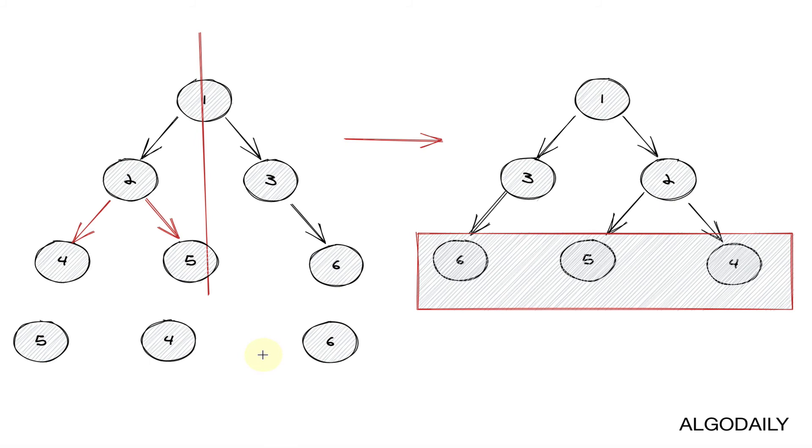The beauty is, because it's recursive, five and four will naturally get swapped with the sixth node. And we'll end up with six, five, four, five and four being the children of two, and six being the left child of three, which is exactly the order that we want.